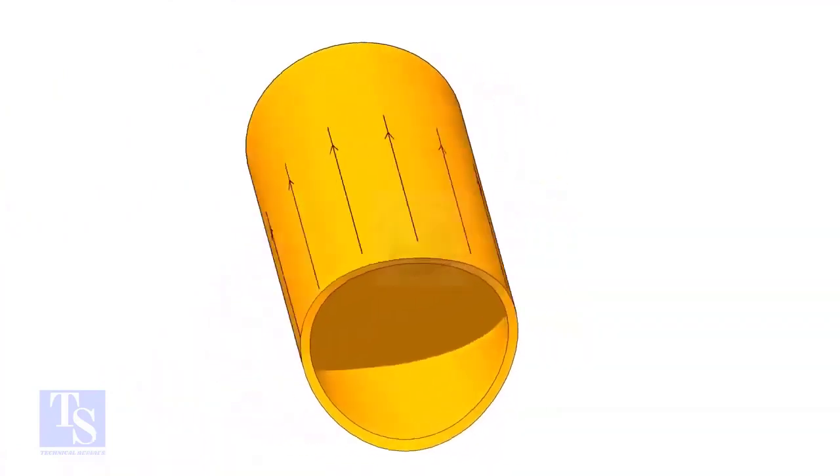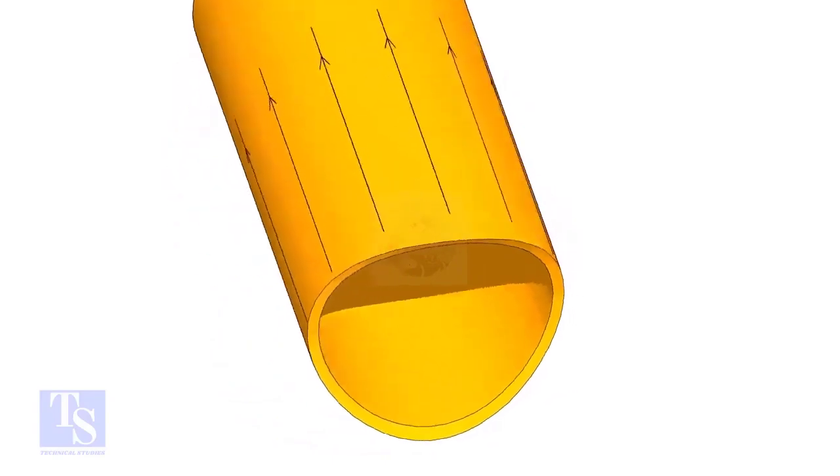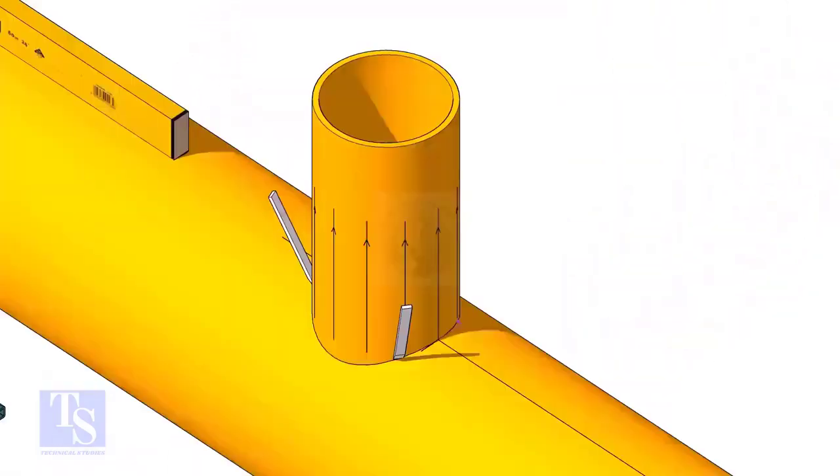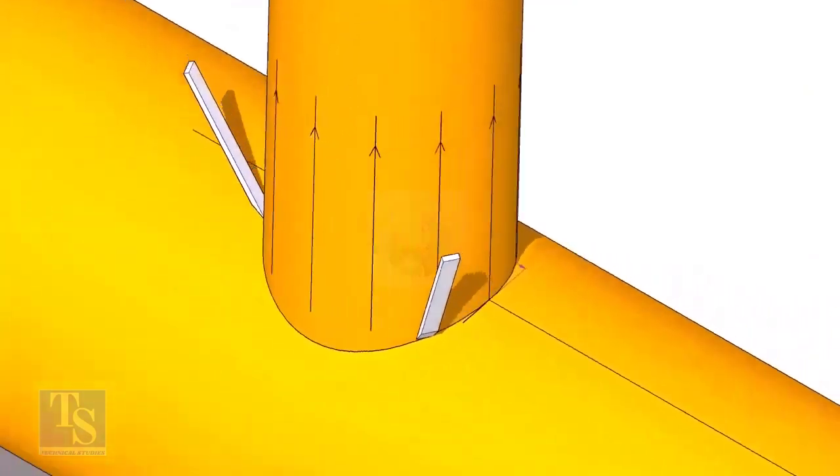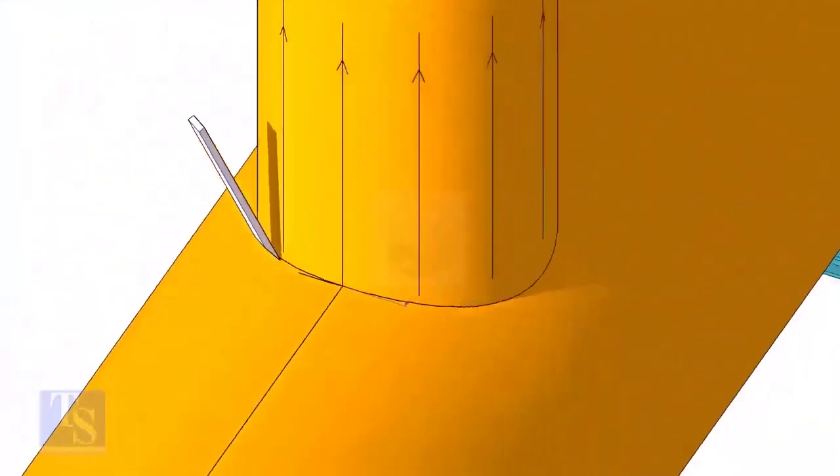After cutting and grinding the notch on the branch pipe, put it on the header. Make sure it is exactly in its position and mark the opening on the header as shown.